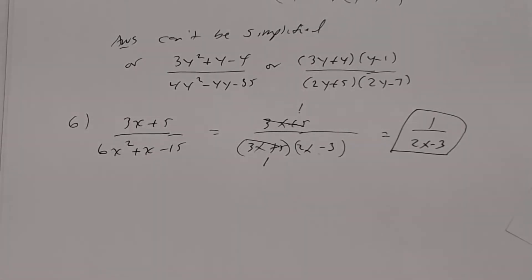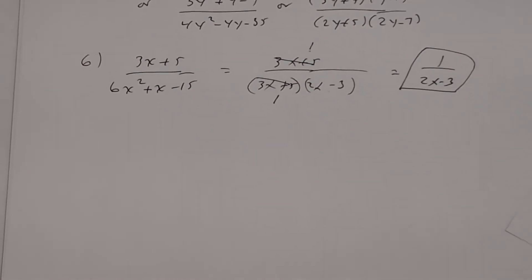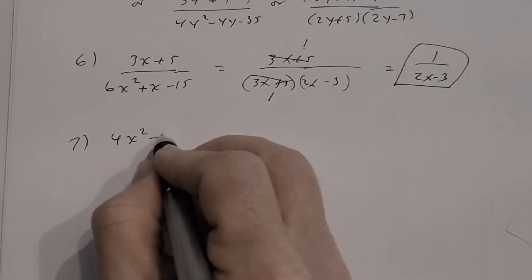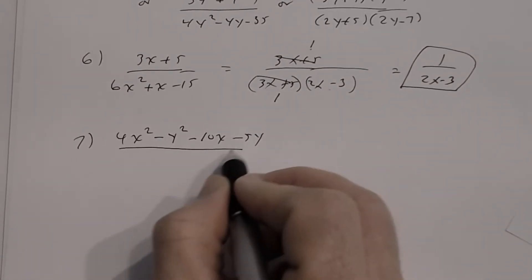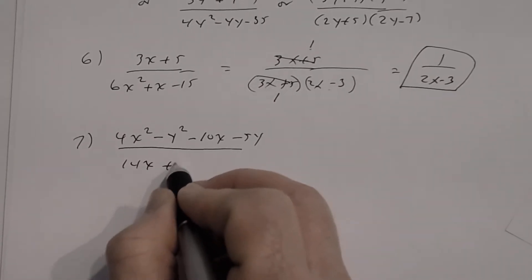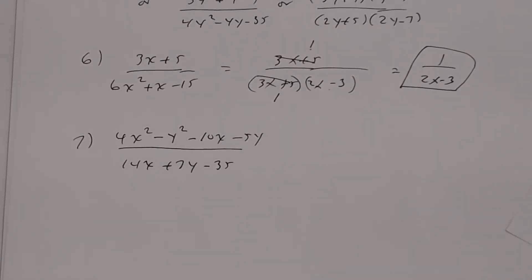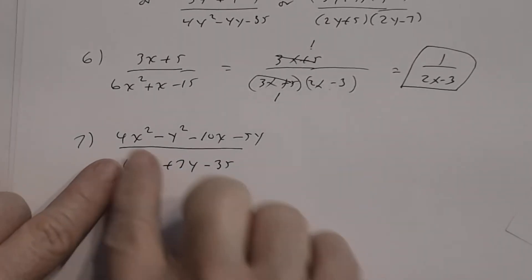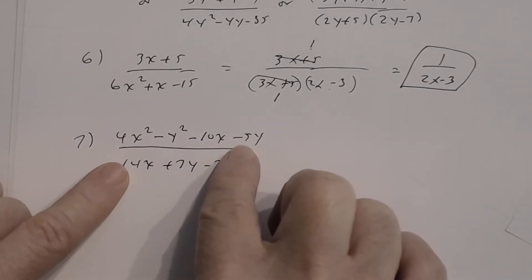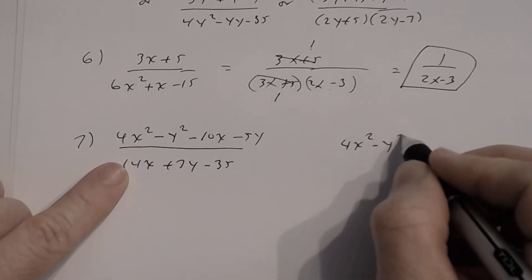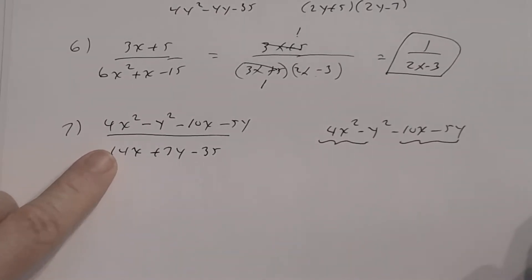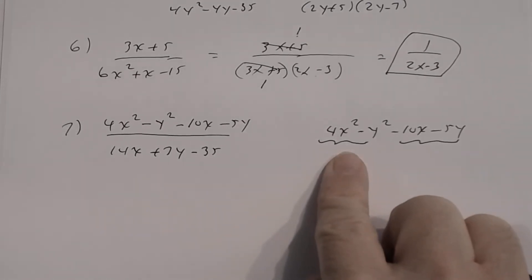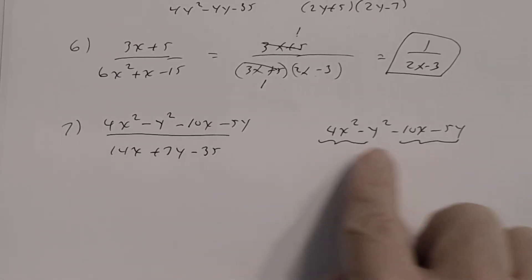Number seven: (4x² − y² − 10x − 5y) divided by (14x + 7y − 35). The numerator has four terms, so try grouping. Rewrite: (4x² − y²) grouped with (−10x − 5y). In the first group, look to see if you can factor further.